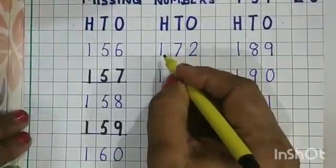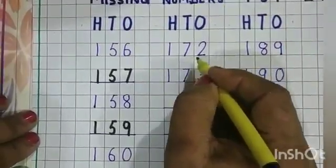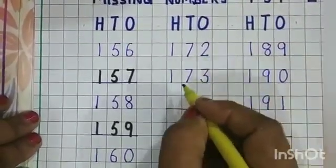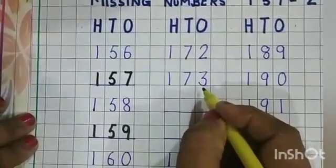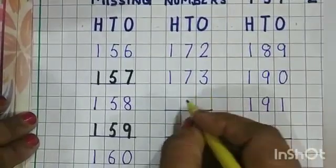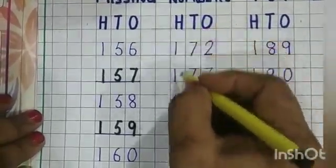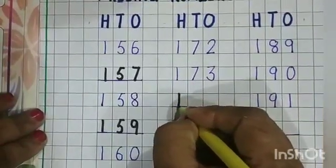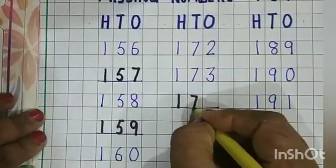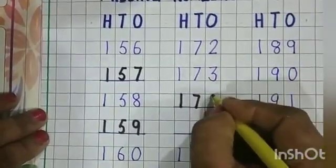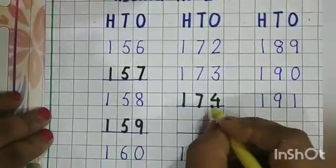we have 172. Next is 173. What comes after 173? 174. So, we will write 174 here.